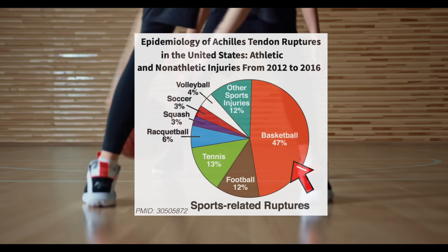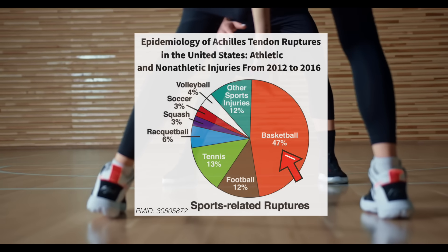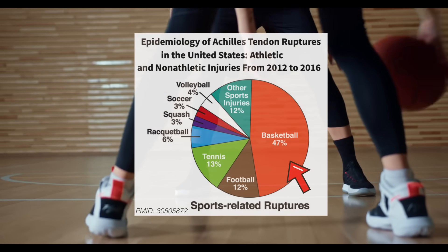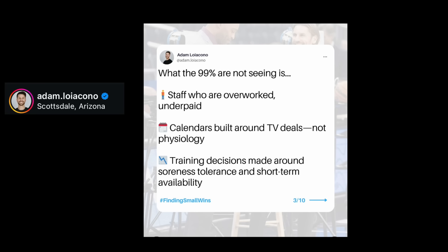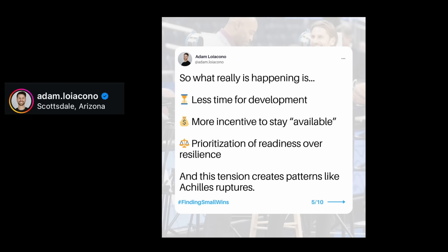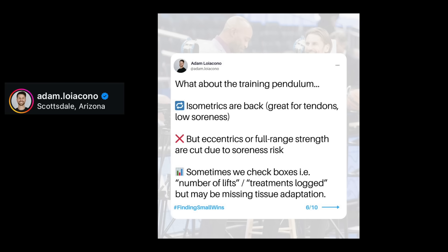Data suggests at least 47% of all sports-related Achilles tendon injuries occur on basketball courts. This is an area that needs to be studied more, as there's very limited data on it. Physical therapists in the NBA have also been speaking out, listing additional factors like the NBA calendar being primarily built around TV deals and not human physiology, staff burnout, less time for player development and injury prevention, and training decisions being made around soreness tolerance and short-term availability over building long-term resilience.